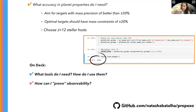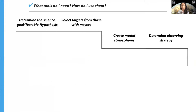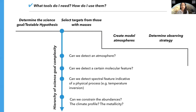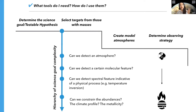Now that we have a good idea of the target list, I'll talk next about what tools you actually need to determine the atmospheric observability of those targets. I'm going to assume you already have a favorite target in mind. For atmospheric studies, when determining your science goals and hypotheses, the first thing you have to do is decide where you sit on what I'm calling the hierarchy of science goal complexity. The level of complexity you can attain in atmospheric science directly relates to how strong your atmospheric signal is — terrestrial planets were somewhere in the tens of ppm range, and hot Jupiters in the hundreds of ppm range.